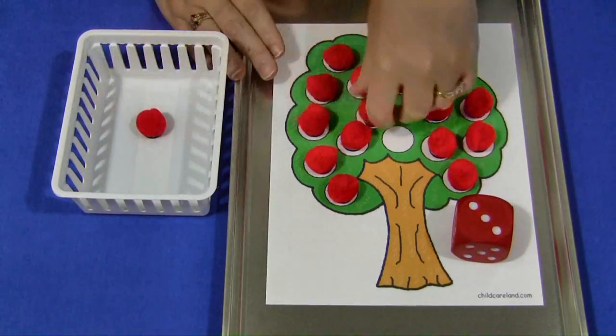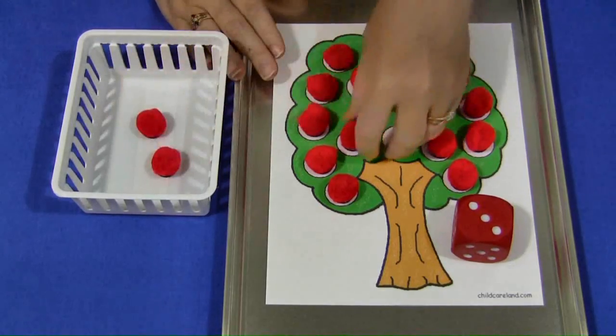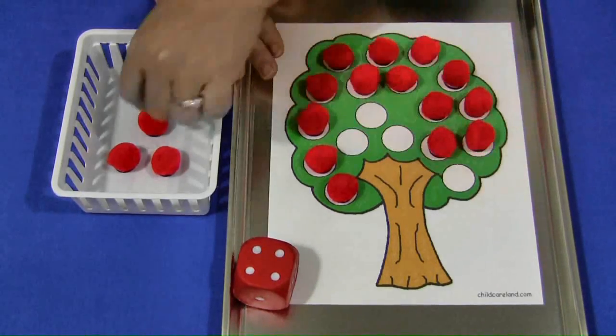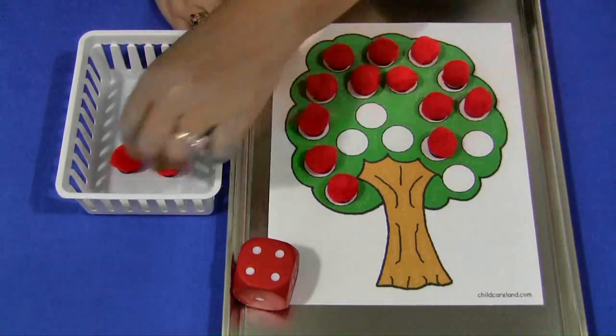They would take off 3 and put them into their apple basket. They would continue that until all of the apples have been picked off the tree.